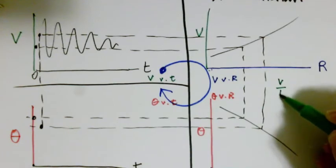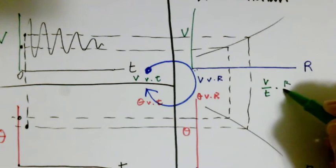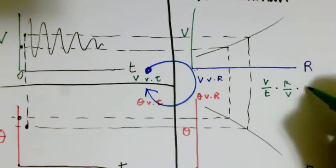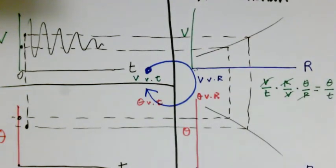But just to kind of show you how this works out, it's a little bit like conversion. We have voltage per time. We know from Ohm's law, we can get voltage per resistance. And then from the sensor, we can get theta per resistance. And that gives us theta versus time.